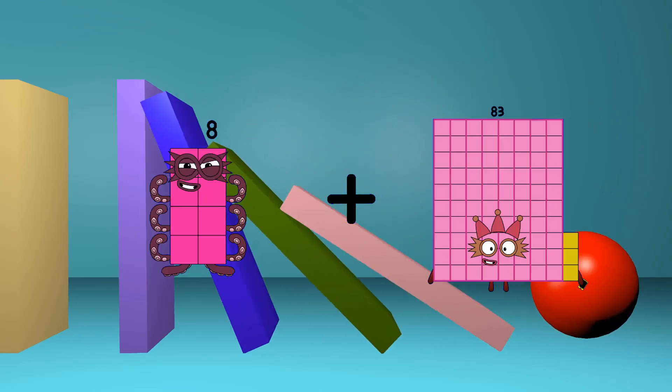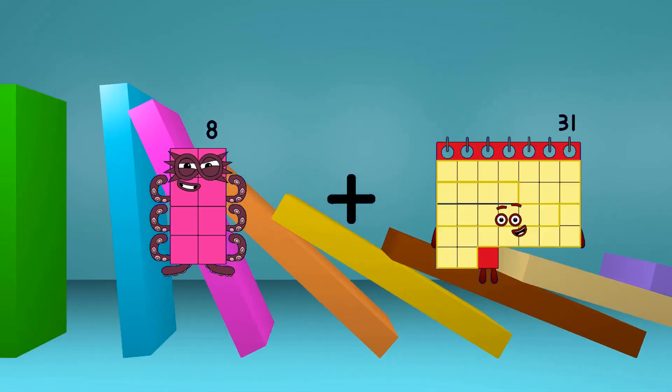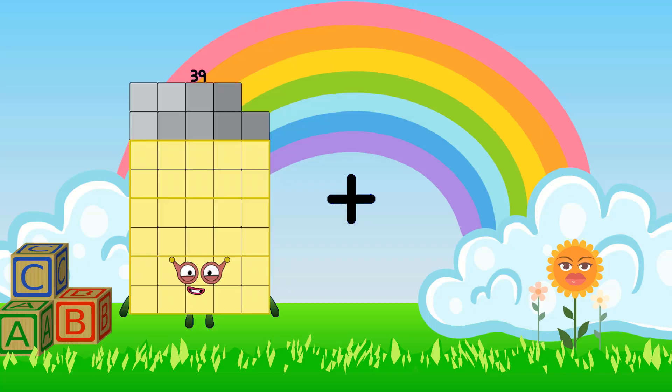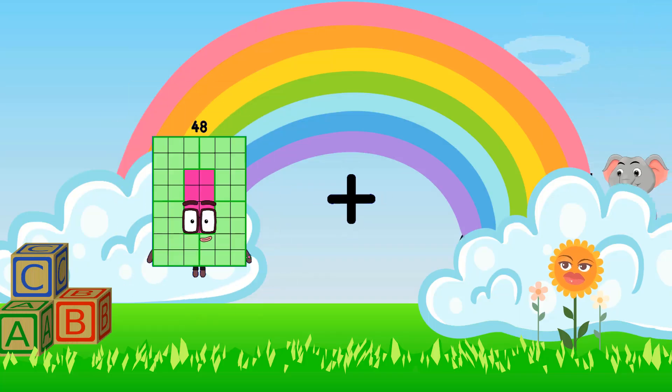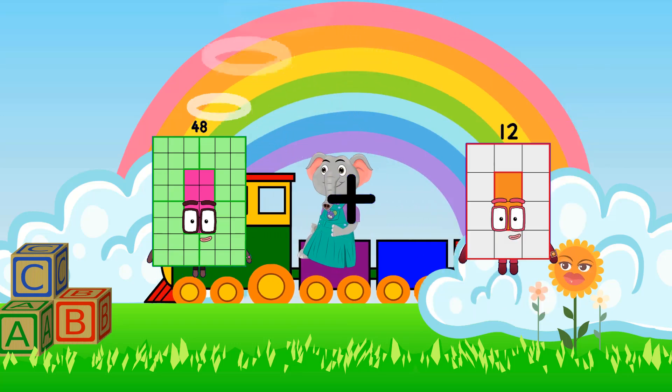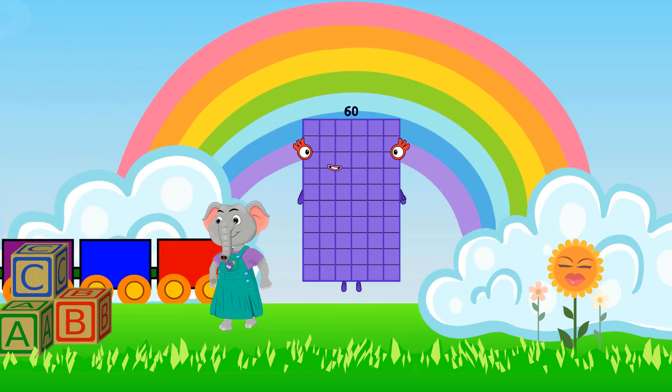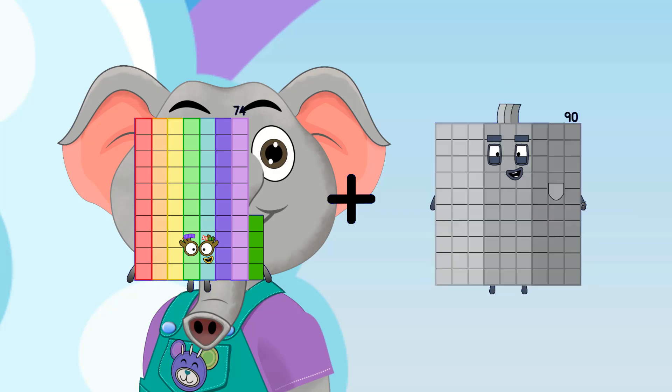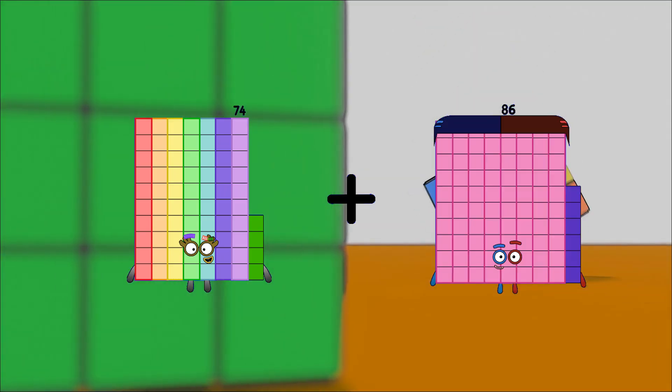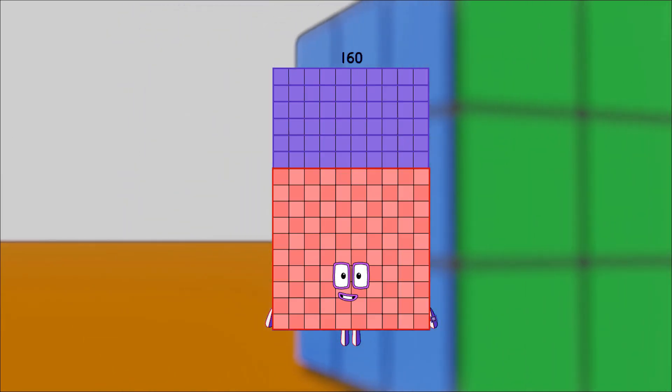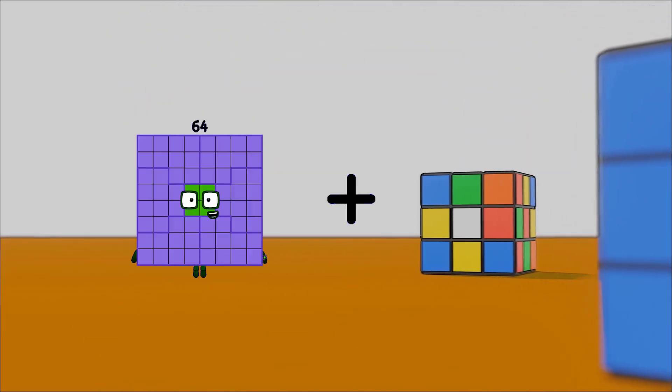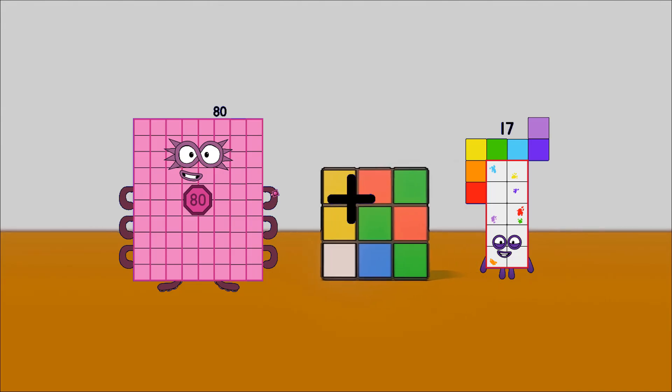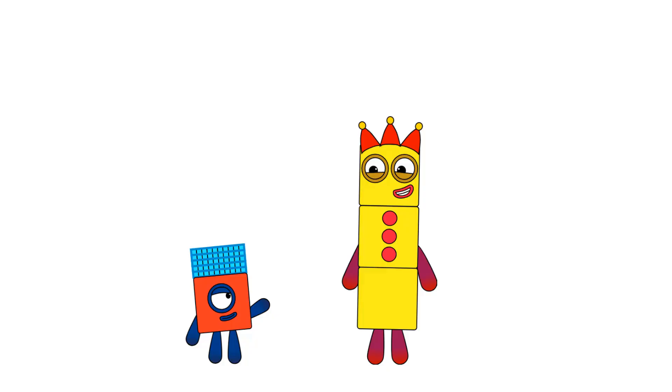8 plus 52 equals 60. 48 plus 12 equals 60. 74 plus 86 equals 160. 80 plus 17 equals 97. Oh, I think I get it now.